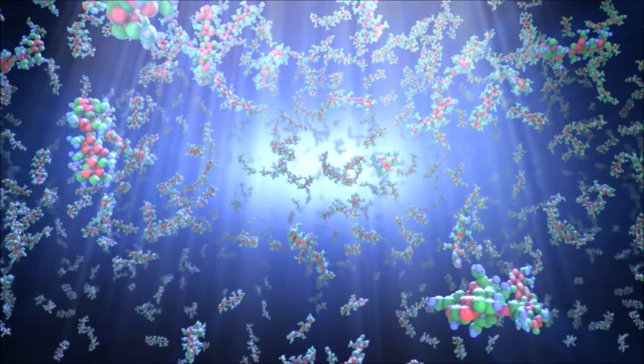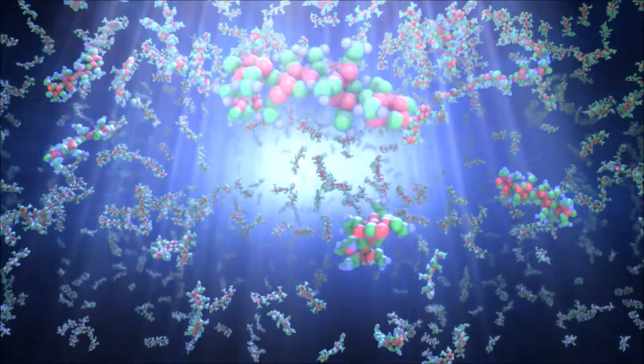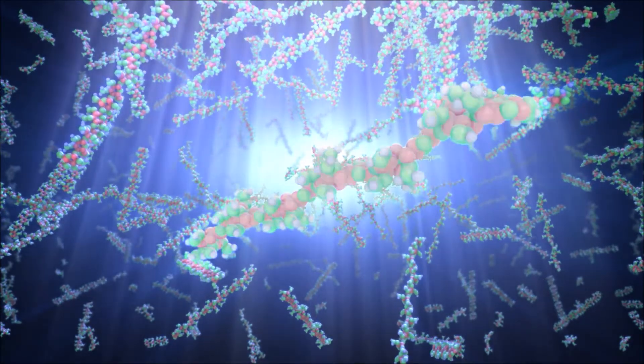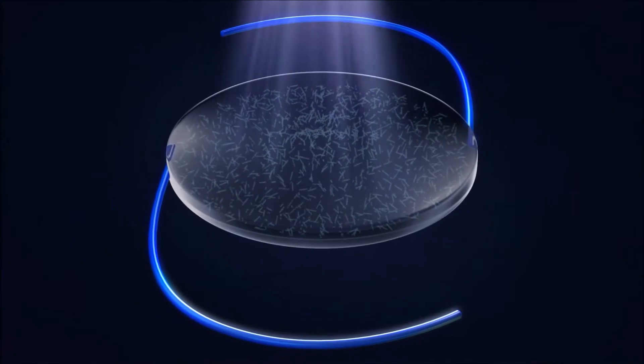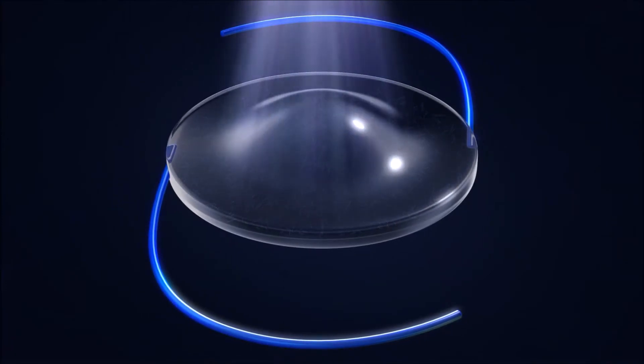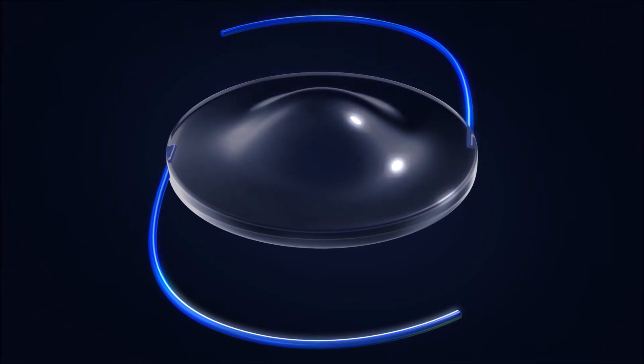When light is directed to a specific area of the lens, macromers in the path of the light attach to the ends of other macromers, forming polymers. The remaining unreacted macromers physically diffuse into the exposed area, causing a highly predictable change in the shape and refractive power of the lens.